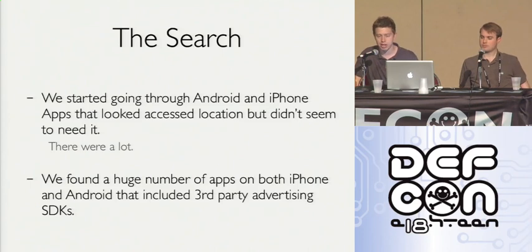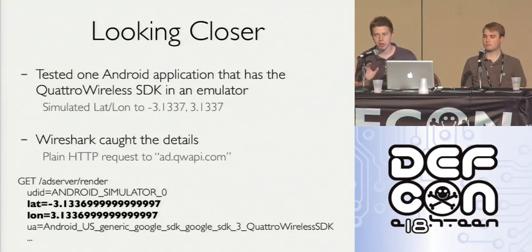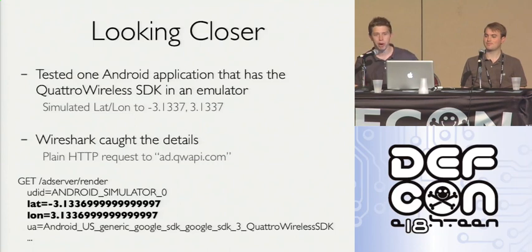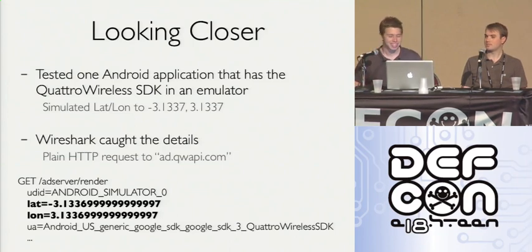We dug in a little deeper. One SDK in particular — Quattro Wireless. In the Android emulator, you can simulate the latitude/longitude (ours was 3.1337, somewhere in the middle of the ocean). We wire-sharked it and found an ad request to the Quattro Wireless ad server containing a poorly-rounded version of our latitude and longitude. And it was sent over plain-text HTTP.